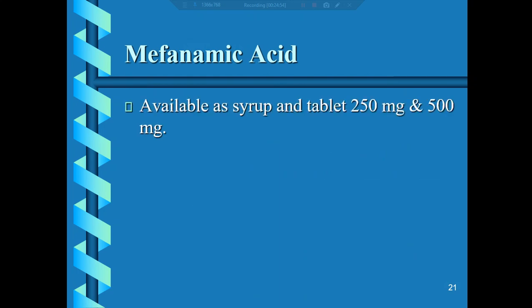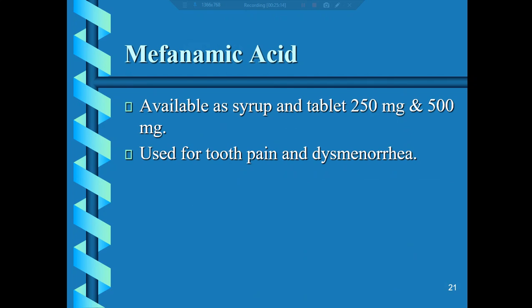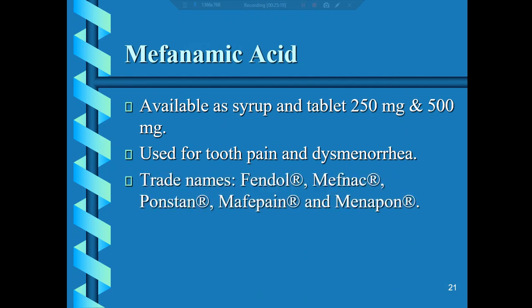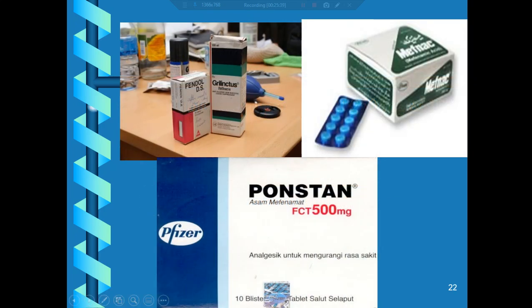Mefenamic acid is available as syrup and tablet in 250mg or 500mg. It is commonly used for tooth pain and dysmenorrhea — dentists frequently prescribe mefenamic acid or ibuprofen alongside amoxicillin and metronidazole. Trade names include Elfindol, Mifinac, Ponstan (Pfizer), and Minabon.